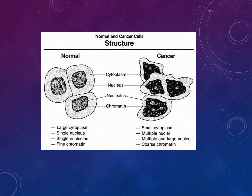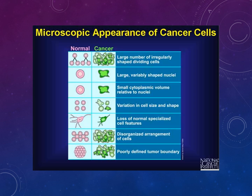Normal cells have a large cytoplasm, single nucleus, single nucleolus, and fine chromatin. Cancer cells have a small cytoplasm, multiple nuclei, multiple and large nucleoli, and coarser chromatin. Microscopically, cancer cells show a large number of irregular dividing cells, oddly shaped with large variable-shaped nuclei, small cytoplasmic volume relative to nuclei, variation in cell size and shape, loss of normal specialised cell features, and a poorly defined tumour boundary.